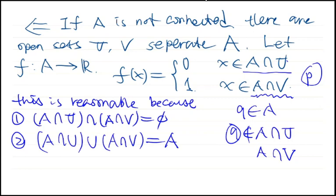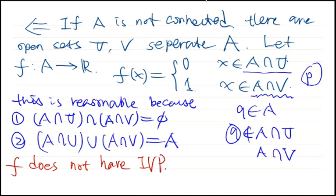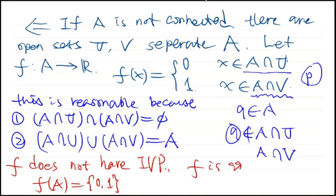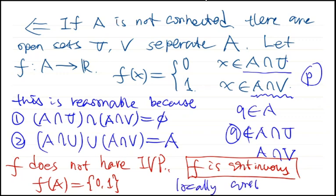We can see that f does not have the intermediate value property but is continuous. f does not have the intermediate value property because its image consists of only 0 and 1 — just two points — so the image is not an interval. But f is continuous because it is locally constant.